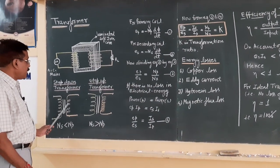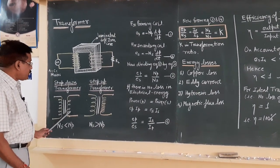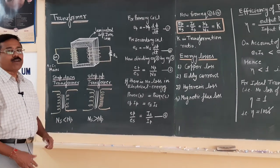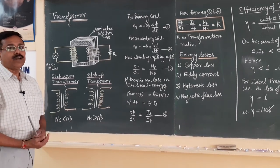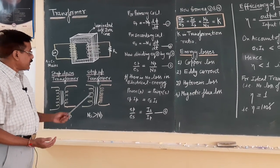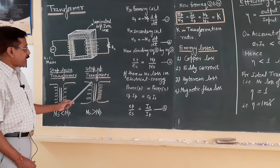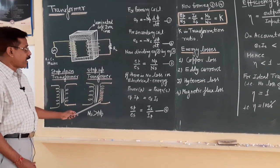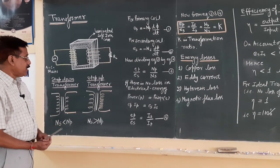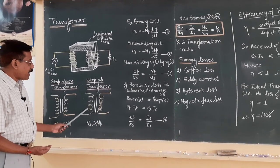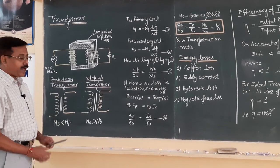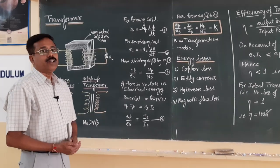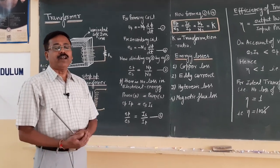In a step-down transformer, the number of turns in the secondary coil is always less than the number of turns in the primary coil. In the case of a step-up transformer, the number of turns in the secondary coil is always greater than the number of turns in the primary coil. These vertical lines in the diagram represent the soft iron core.